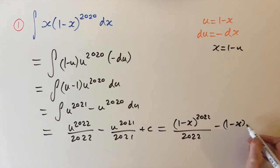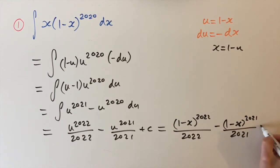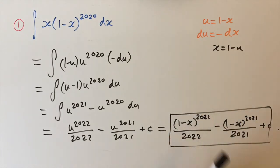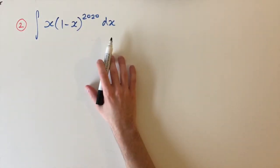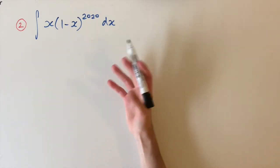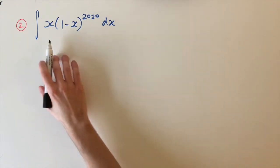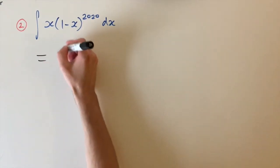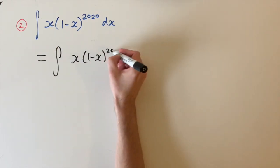That gives us the result of minus u to the power of 21 over 21 plus c. I'm just going to wipe the board and look at the second strategy. The second strategy is just a brute force algebra strategy. It's similar to the substitution but takes a slightly different path. We're going to start with the same integral: x times (1 minus x) to the power of 20.